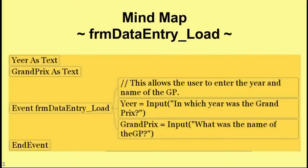But why is year text and not integer? Surely 2011 is an integer — yes it is, but we're not using it as such in this program. Year is only going to be used as part of a file name, and because that's going to be treated as text and we're never going to do any arithmetic with it, its type is text. Grand Prix as text is just saying that the name of the Grand Prix is going to be text.